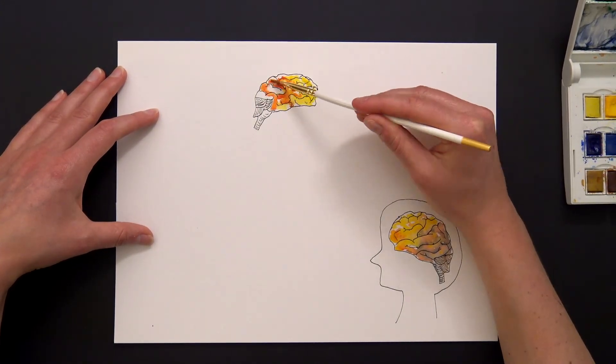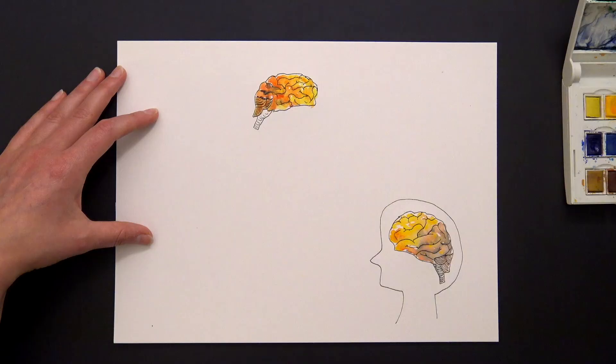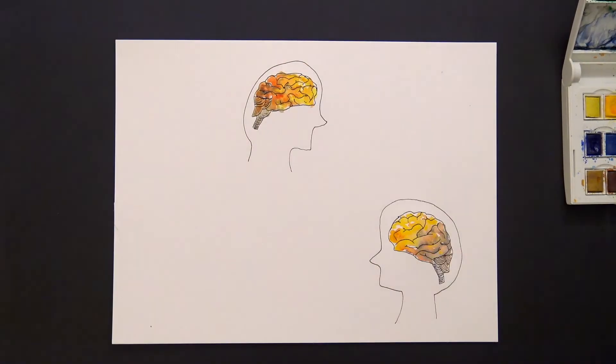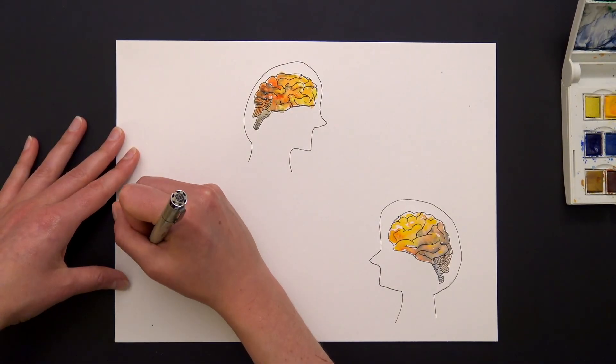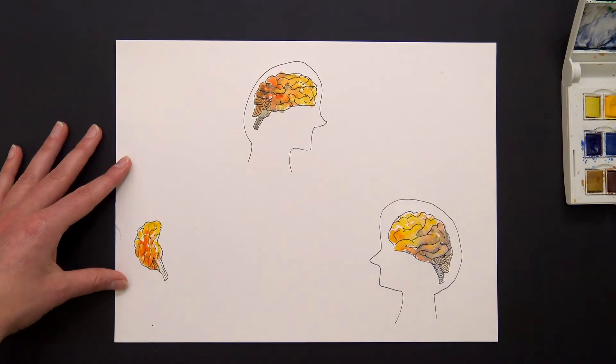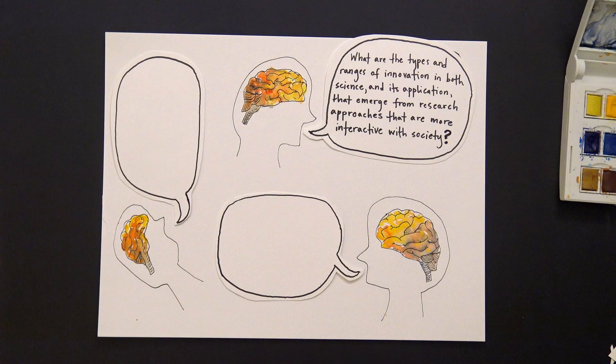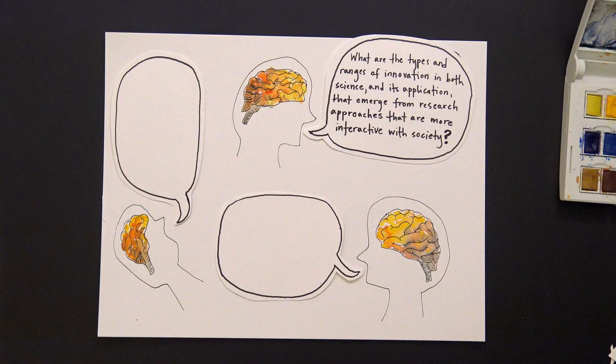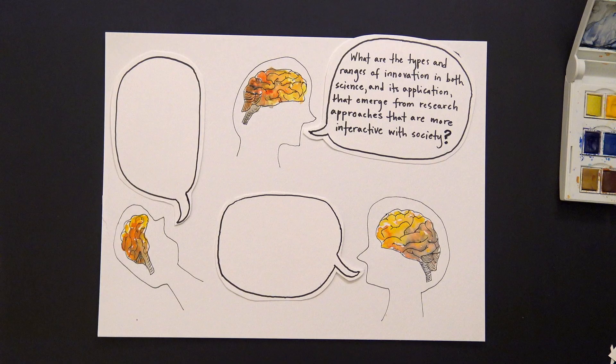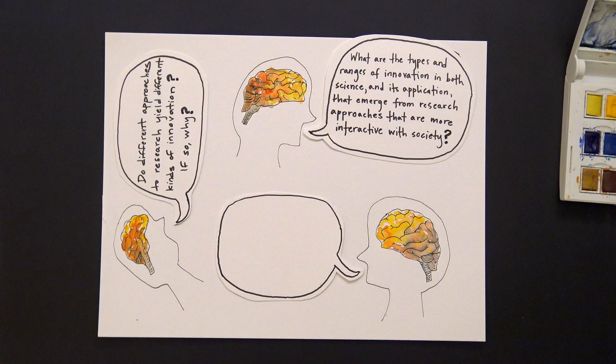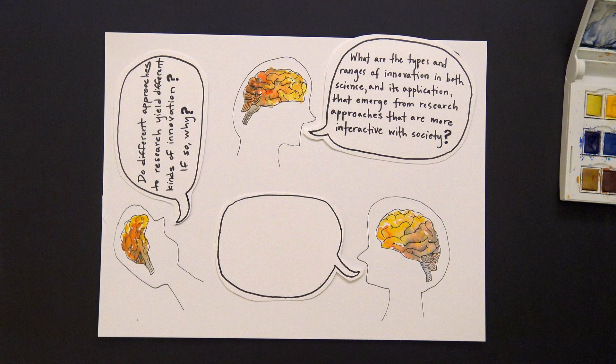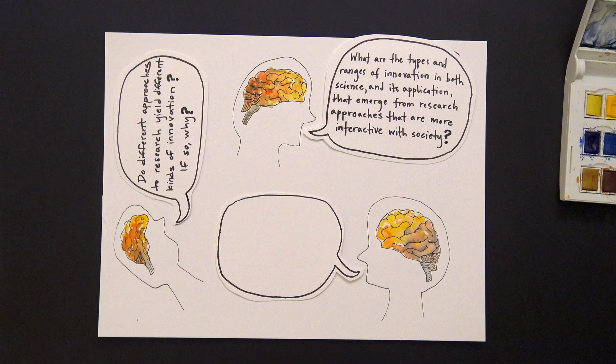Learning more about innovation in this context requires many different kinds of scientists and scholars working together with users, funders, and beneficiaries of science, and asking lots of questions, like: What are the types and ranges of innovation in both science and its application that emerge from research approaches that are more interactive with society? Do different approaches to research yield different kinds of innovation? If so, why?